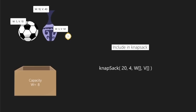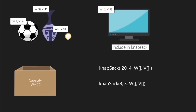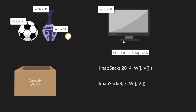Here's how the function call will look for this smaller sub-problem: capacity is 8 and number of items is 3. Coming to the second case, which is to exclude the monitor from the knapsack — we are again left with a smaller sub-problem but the capacity is not reduced this time. We have three items to choose from but the capacity is still 20.